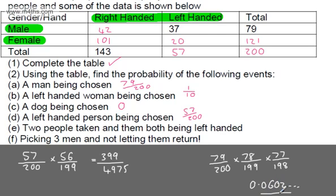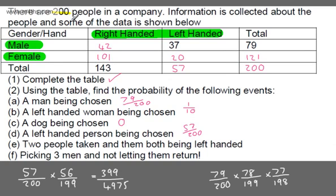We would round that to the level of accuracy given. These last two are examples of conditional probability. If this involved replacement and the person was put back, the two left-handed calculation would simply be (57 over 200) times (57 over 200). I've assumed they're taken away and not returned. So there we go — working with two-way tables: getting the information, filling it out, and answering questions based on that information.